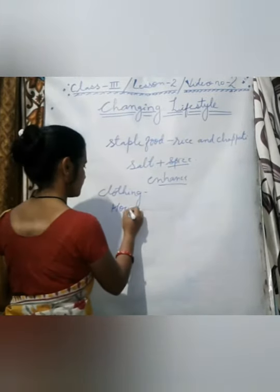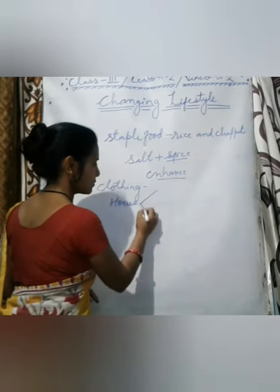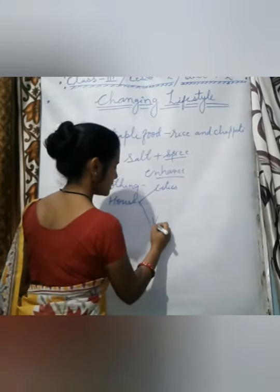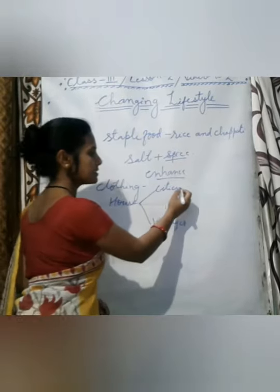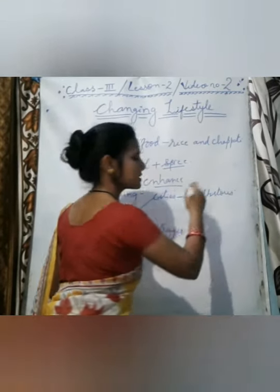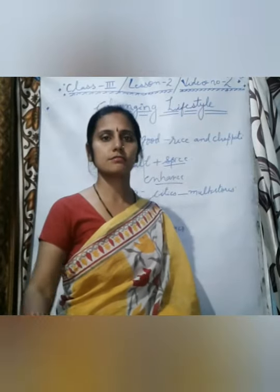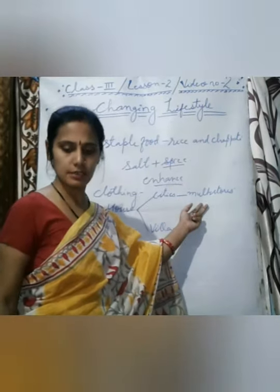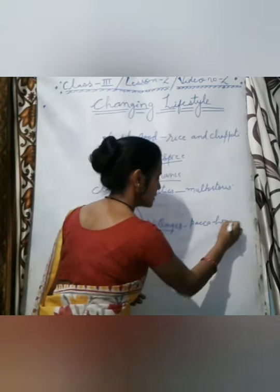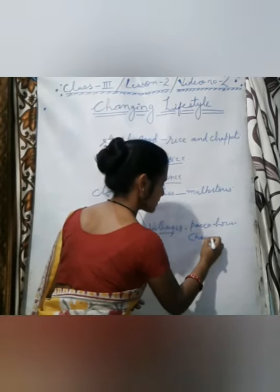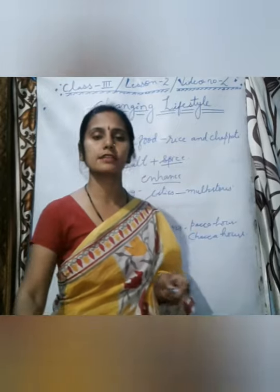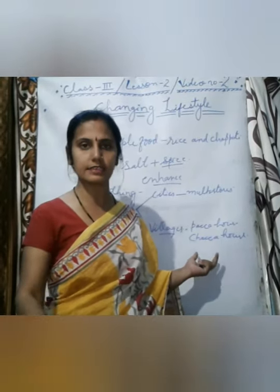Next is housing style — how our houses have changed. There are two types of houses: those in the cities and those in villages. In cities, people live in multi-story houses, meaning houses with three or four floors. In villages, some people live in pakka houses and some in kaccha houses. Earlier, people only lived in mud houses, but this too is changing.